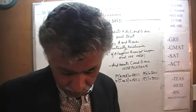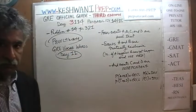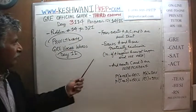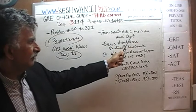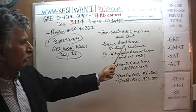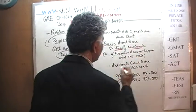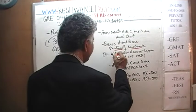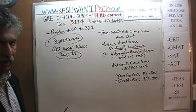Here is the problem — problem number 14 on page 321. It says we have 4 events: A, B, C, and D, such that events A and B are mutually exclusive. What does it mean to be mutually exclusive? It simply means that if A happens, B cannot happen — they cannot both happen at the same time.